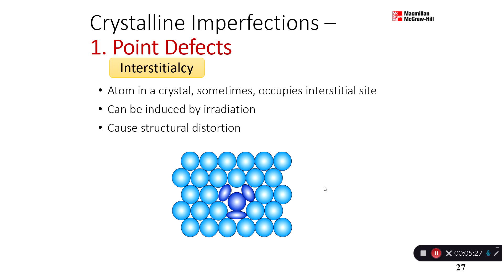Now let's look into details. The first defect is an interstitial. You have learned about interstitial solid solution before — this is something else, but the concept is the same. Interstitial is about having a solid atom filling in empty spaces. In the defect point of view, we have something called an interstitial: atoms in a crystal sometimes occupy an interstitial site. This is not necessarily a solid solution, but just one of the atoms of the material itself that managed to squeeze into the empty space.